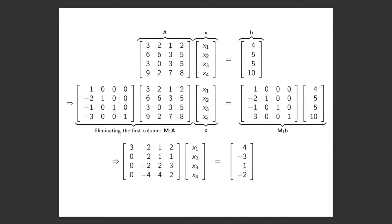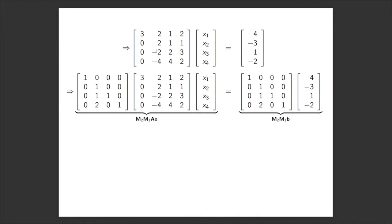Multiplying M1 and A, we get this matrix here, multiplying M1 and B, we get this vector here. So now we want to continue on with that. We've got this matrix here now. We want to clear out this minus 2 and minus 4 from the second column.